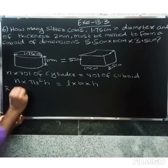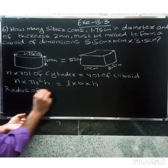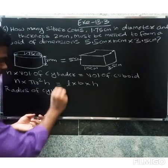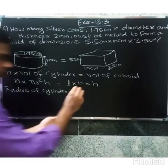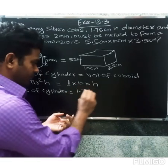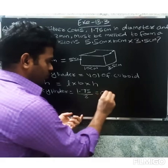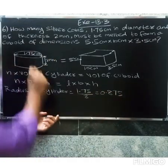Radius of cylinder equals diameter 1.75 centimeter divided by 2, which equals 0.875 centimeter.